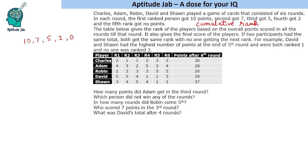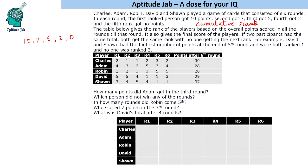Based on this table, we have to find the number of points scored in each round and answer the questions. We can directly fill in the points after the sixth round: 30, 28, 20, 29, and 37.